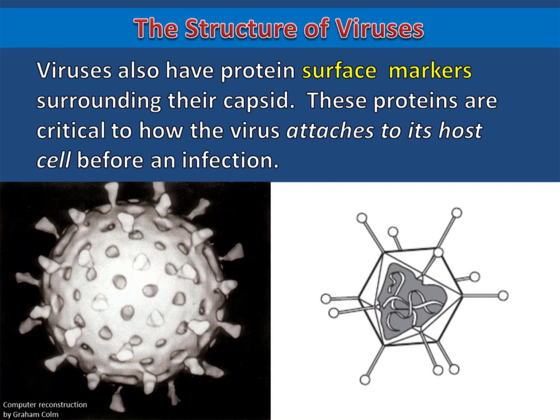Viruses also have protein surface markers surrounding their capsid. These proteins are critical to how a virus attaches to its host cell before an infection.